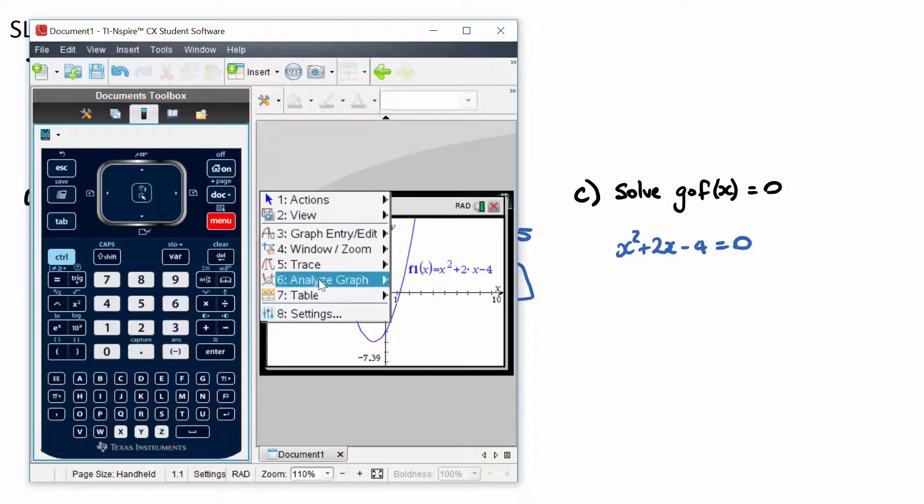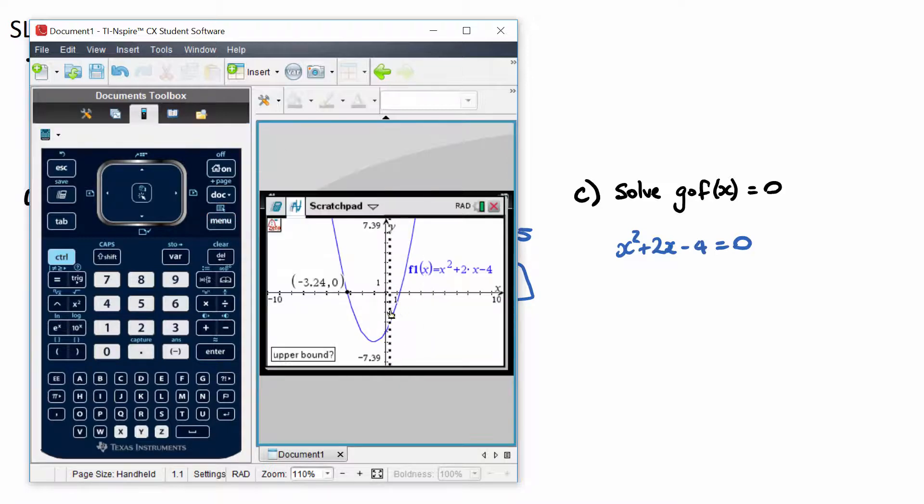And I'll do it again. Menu, analyze graph, 0. And this is the second one. So these are the two x-intercepts: negative 3.24 and 1.24.